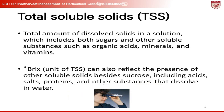Total soluble solids, or TSS, might sound complex, but it's essentially a measure of the sugars present in our fruits and vegetables. Higher TSS levels often mean sweeter produce, making it a vital metric for growers and consumers. Brix can also reflect the presence of other soluble solids besides sucrose, including acids, salts, proteins, and other substances that dissolve in water.